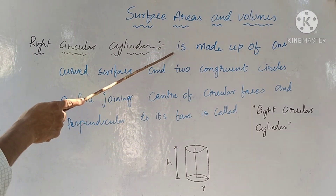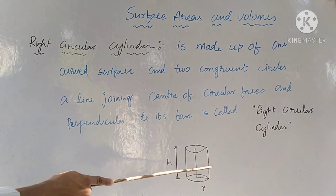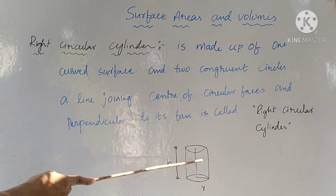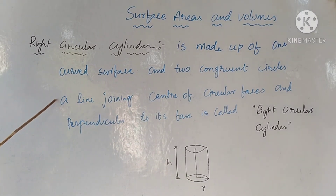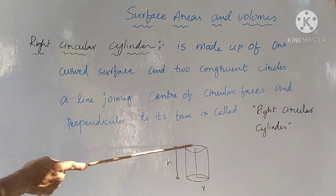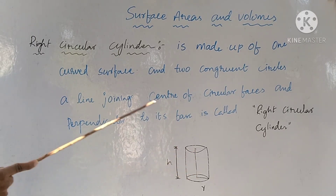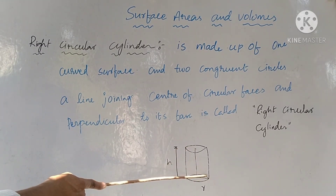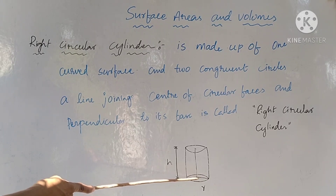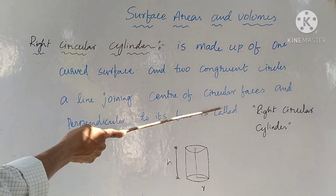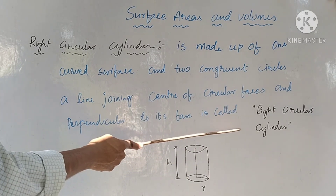To repeat: the cylinder is made up of one curved surface and two congruent circles (top and bottom). The line joining the centers of the circular faces is also called the height, and it is always perpendicular to its base — the bottom circular face. So the entire diagram is called a right circular cylinder.